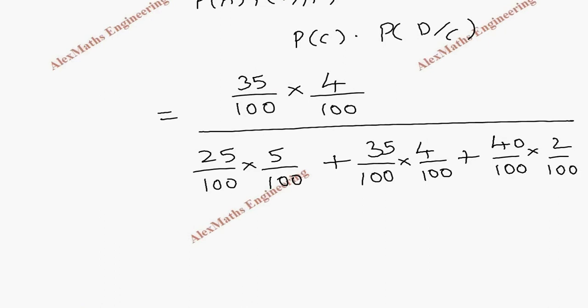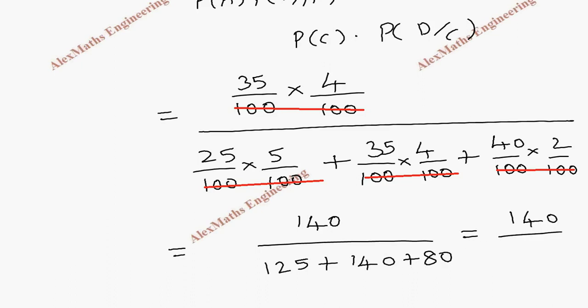Now, we can cancel all the common denominators and the rest of the terms we are going to simplify. So, this is 35 into 4 is 140 and this is 125 plus 140 plus 80. So, finally, it is 140 divided by 345.